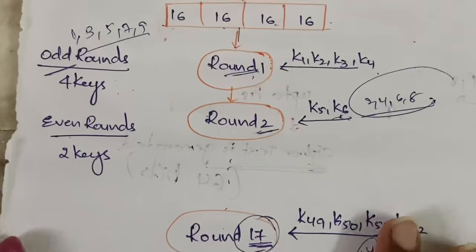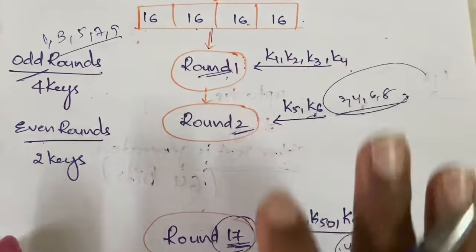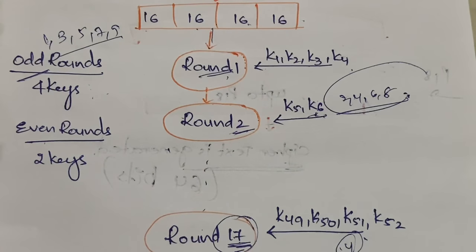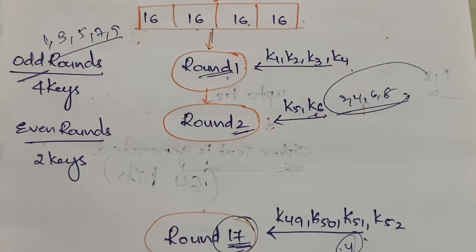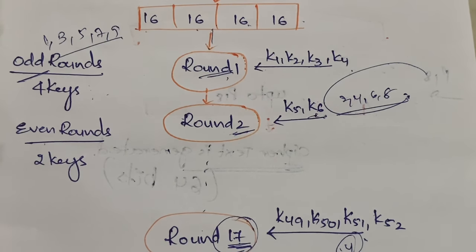In DES and AES algorithms, there is a standard procedure inside each round — such as MixRows, SubBytes, MixColumns, ShiftRows. But in the IDEA algorithm it is not the same for all rounds. For even number of rounds you have one procedure, and for odd number of rounds you have another procedure — the procedure varies between even and odd rounds.